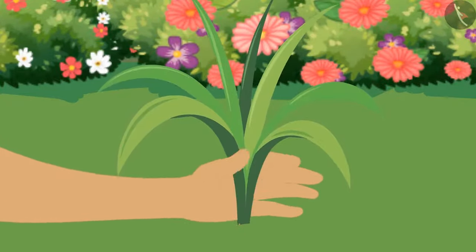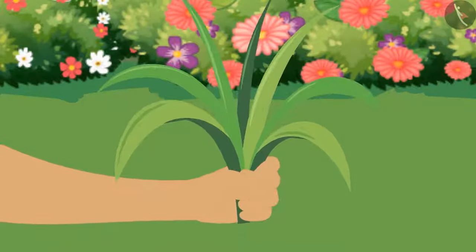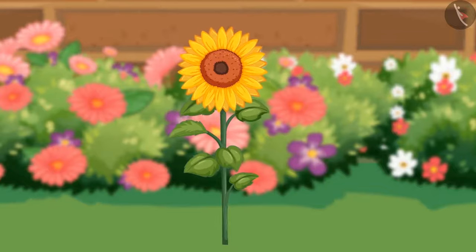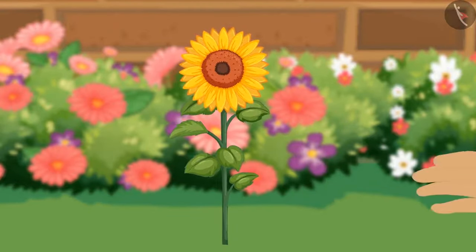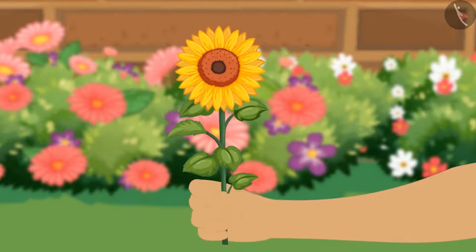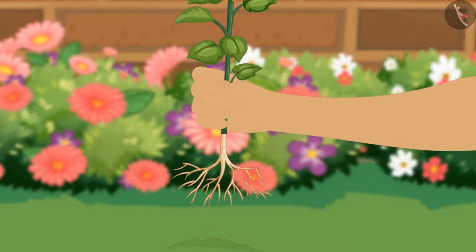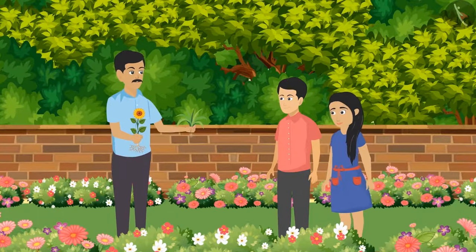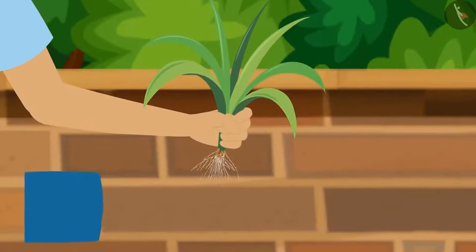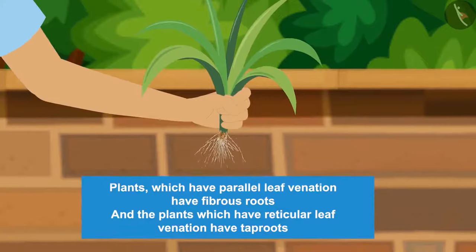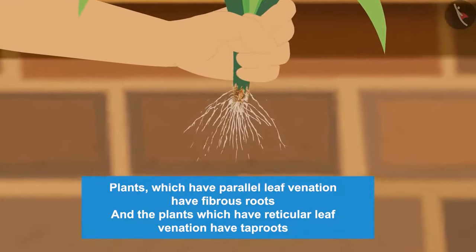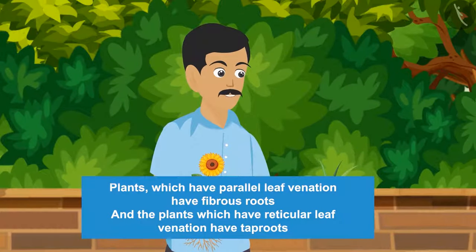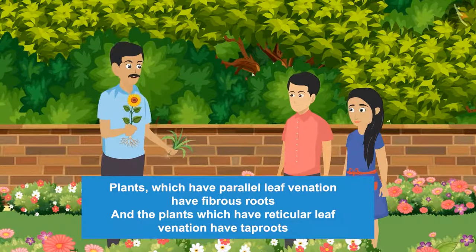Sundar uncle carefully uproots a grass plant with its roots, and does the same with a plant whose leaves have reticular leaf venation. Children, have a look: the grass plants which have parallel leaf venation have fibrous roots, and the plants which have reticular leaf venation have tap roots.